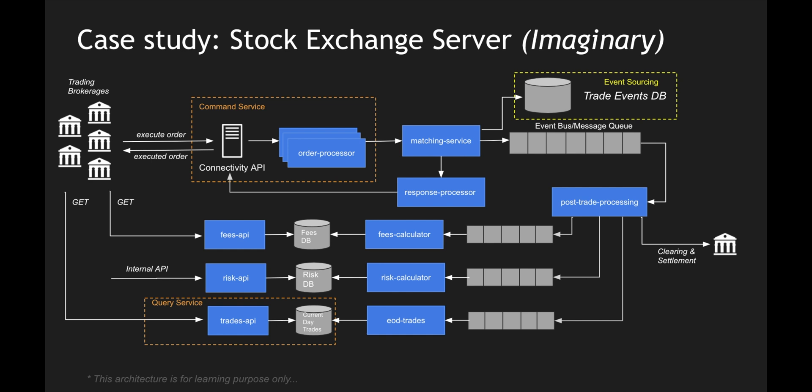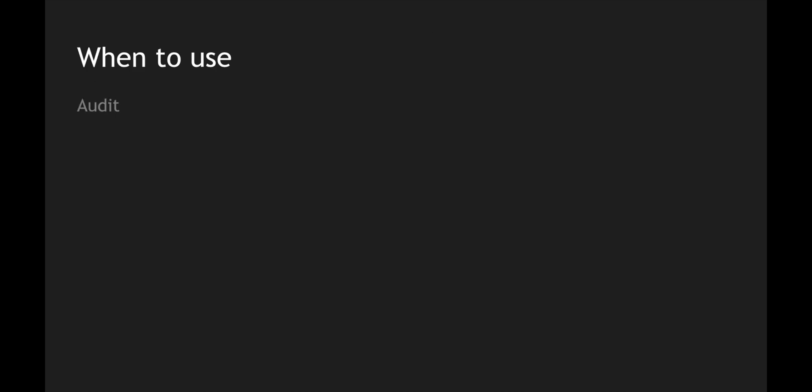Now let's move to when should you use it. One classic example is this architecture — if you're working in a system like this, you can definitely use CQRS. If you don't want to use a traditional database but want to rebuild the state of your application from a sequence of events, you should use event sourcing. You can also use it for audit logging — if you want to identify the audit pattern of your application, you can leverage event sourcing and expose audit APIs using the CQRS pattern.